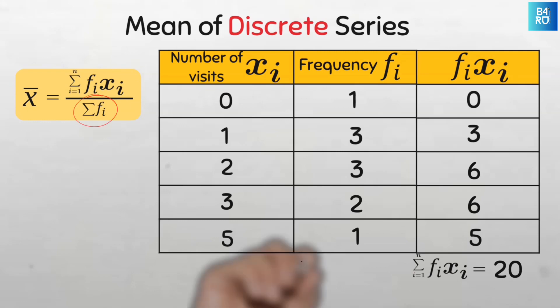Now the denominator for the formula is the sum of the frequencies which is 10. The question even says that we have 10 children, right? So our mean is 20 divided by 10, giving a mean of 2.